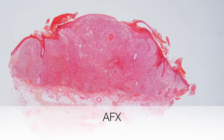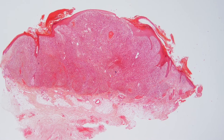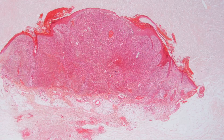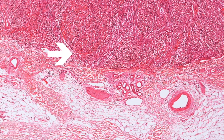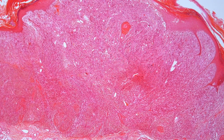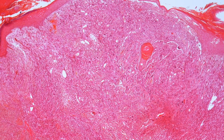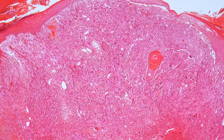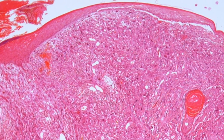This is a low-power view of an AFX. The lesion is polypoid. You can see how well demarcated the lesion is from the underlying dermis. Here, the tumour can be seen to almost abut the epidermis, but it is separate from the epidermis and clearly does not arise from the epidermis.